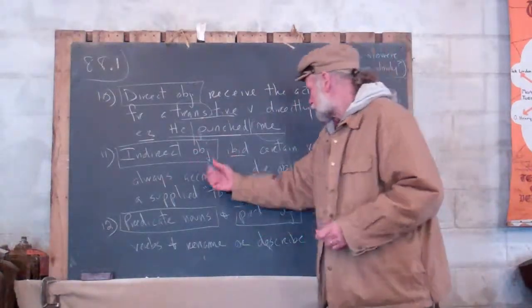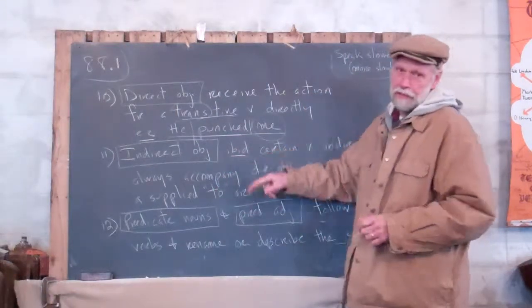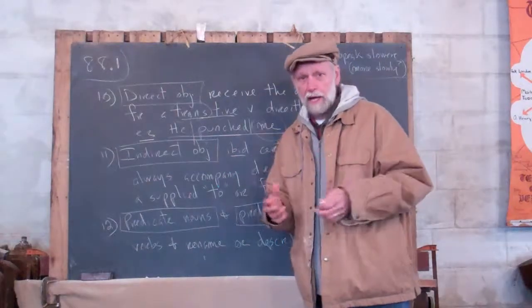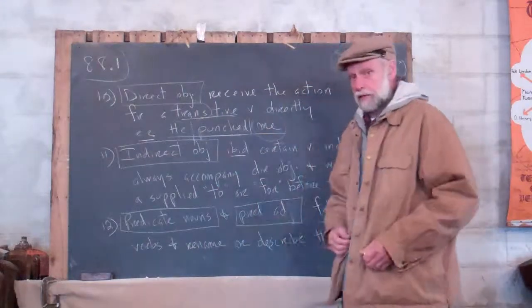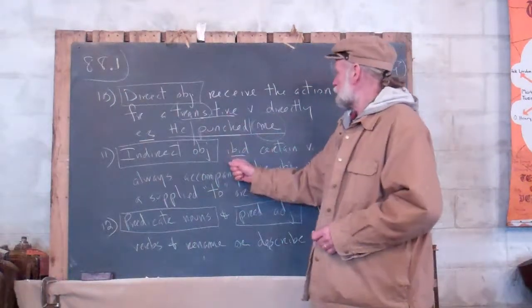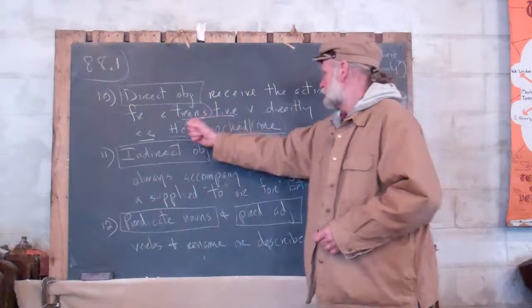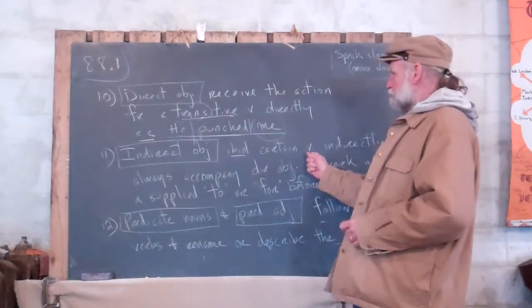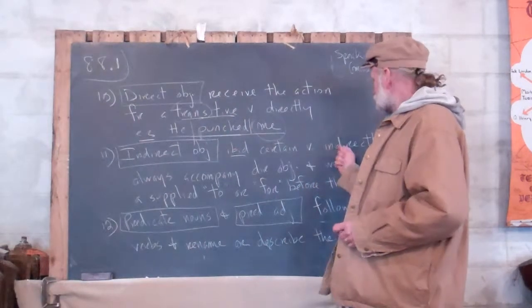Indirect objects - they ibid. There's an abbreviation I've used a lot in the course so far. That means the same as above. So indirect objects receive the action from certain verbs indirectly.